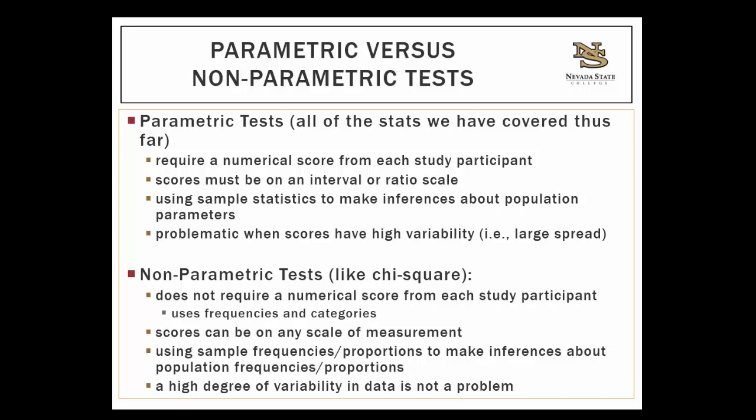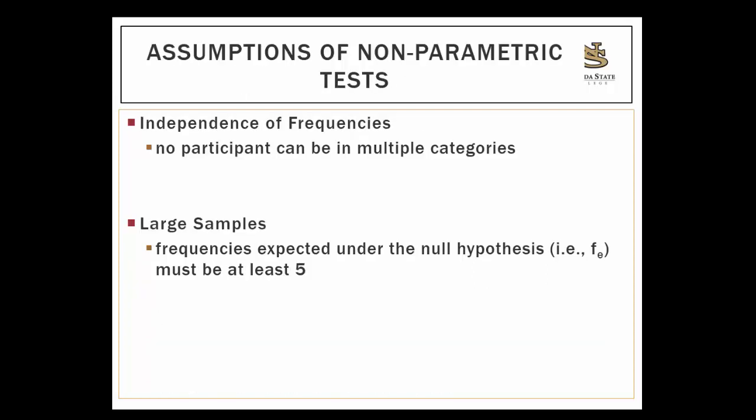Even if an independent variable is having an impact on a dependent variable, you may not be able to find significant results because you just have so much spread in your data that it's really hard to get a significant finding. That's not a problem with chi-square. So the assumptions of the non-parametric tests: the first one is the independence of frequencies, which means each observed frequency is generated by a different individual — no one participant is in multiple groups. You also need to have pretty large samples, because if the expected frequency under the null hypothesis for any category is less than five, even a small discrepancy between the observed and expected frequency can result in significant differences.